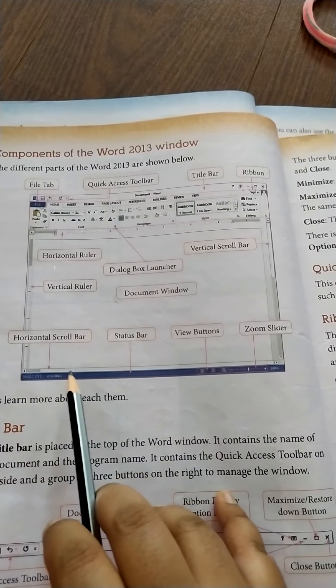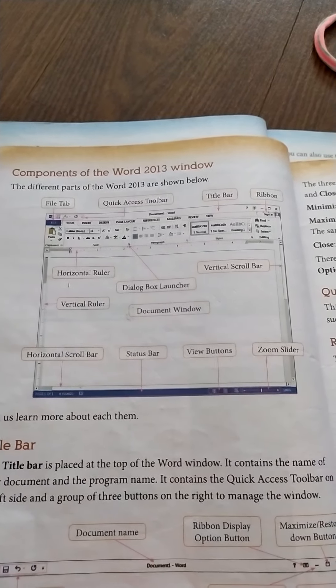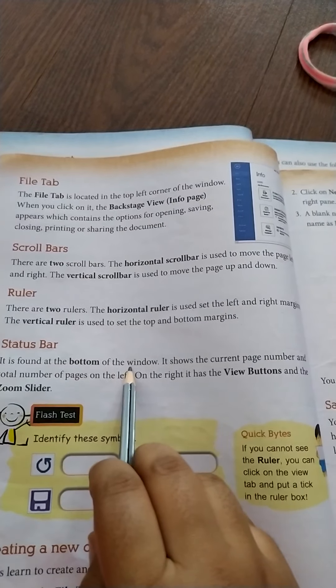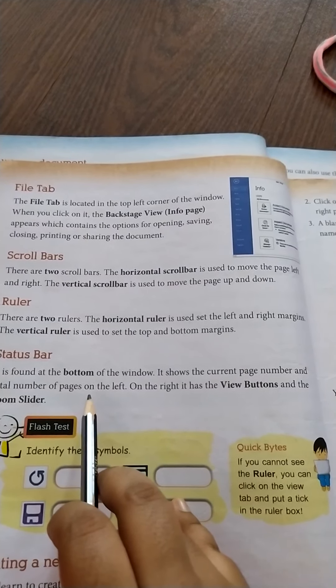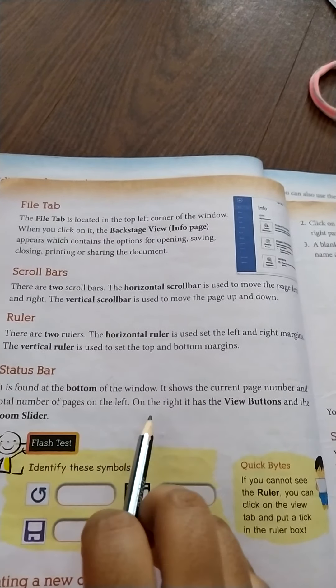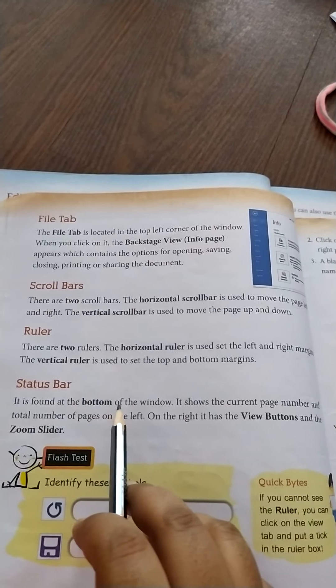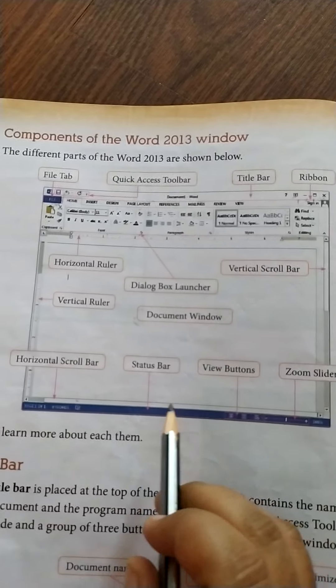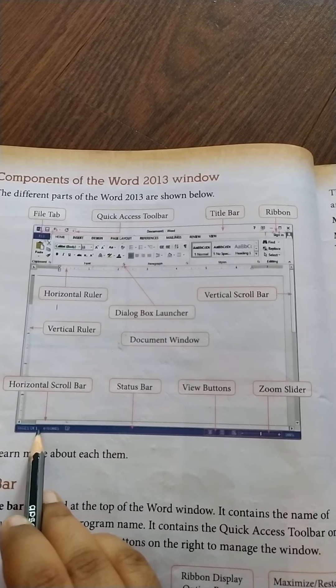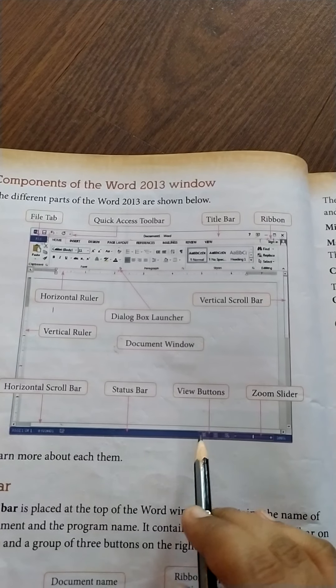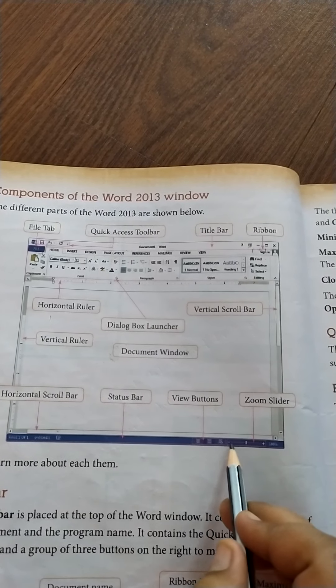Now we will talk about the status bar. It is found at the bottom of the window. It shows the current page number and the number of pages on the left. On the right hand side it has the view buttons and the zoom slider. So in the status bar we can see the page numbers on the left hand side and the view buttons along with the zoom slider on the right hand side.